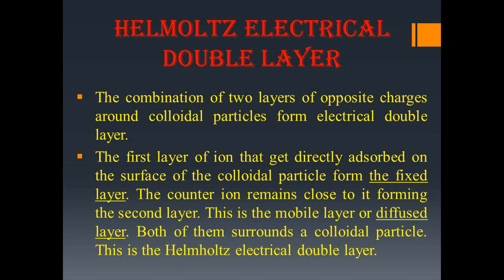The Helmholtz electrical double layer is defined as the combination of two layers of oppositely charged particles around the colloidal particle. The first layer of ions directly attached on the surface of the colloidal particle forms the fixed layer. The counter ions remain close to it, forming the second layer which is always diffused or mobile, referred to as the diffuse layer.